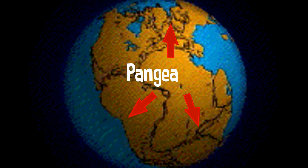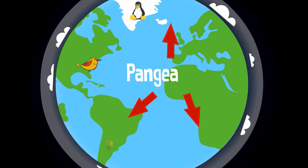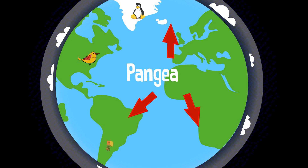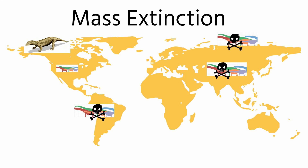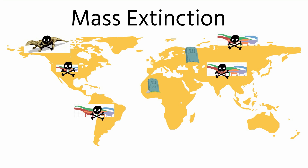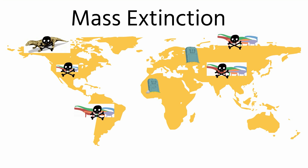The Supercontinent Pangaea was breaking apart during this time and many plants and animals became isolated, which led to more diversity among plants and animals. The Cretaceous time period's end is marked by a mass extinction which resulted in the dinosaurs going extinct, along with many other species.